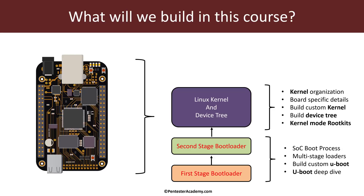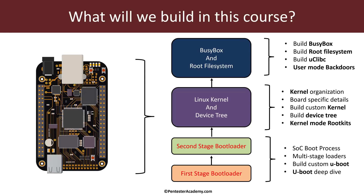From there we'll jump into the Linux kernel and the device tree. Once the first and second stage bootloaders run, they bring up the kernel, pass it the device tree and arguments so the kernel can run. We'll look at board-specific details to understand how embedded kernels are built, then build a custom kernel and a device tree for our board. We'll also understand how kernel mode rootkits work on embedded systems, with concrete examples where we provide you source code to compile and run.